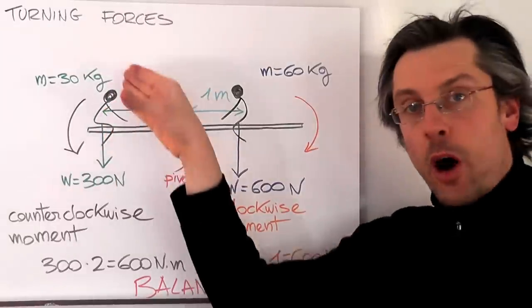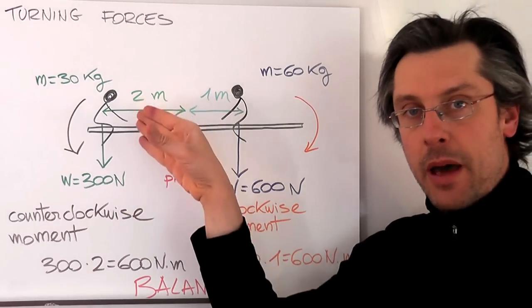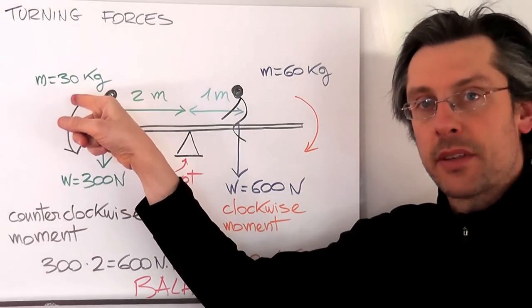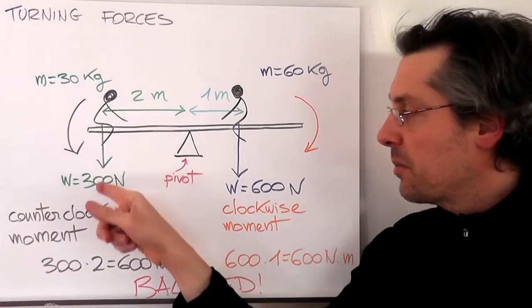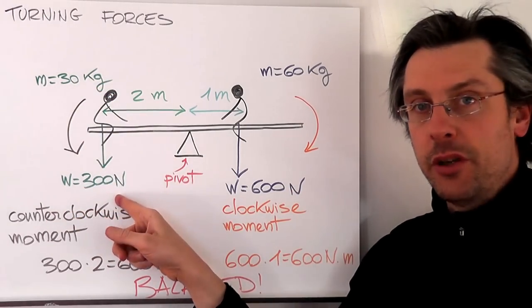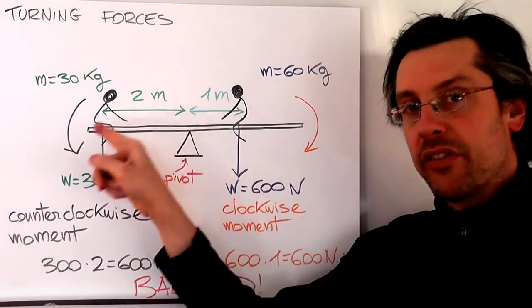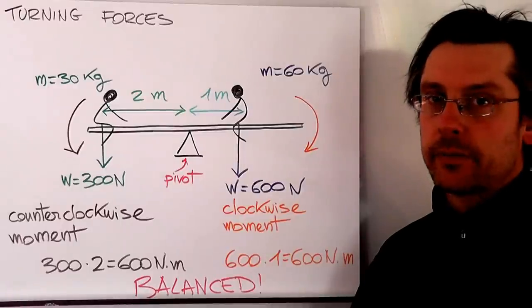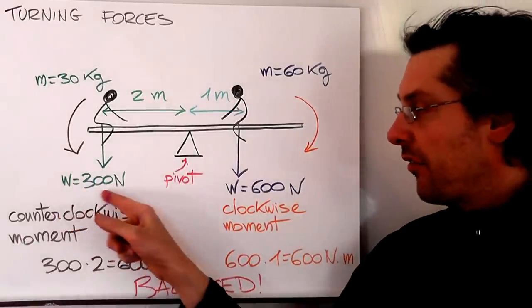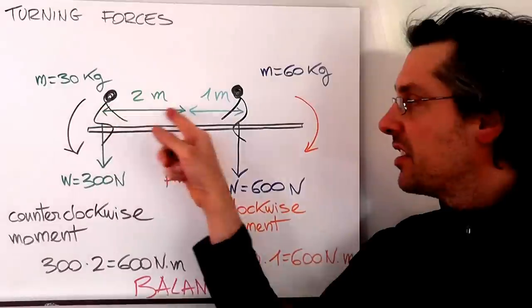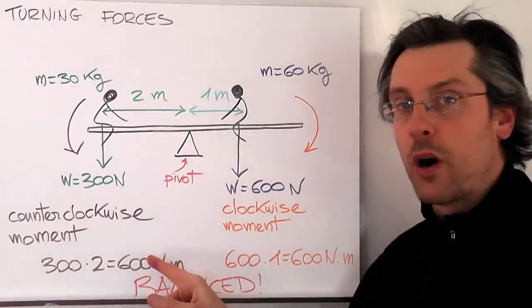The force is obviously given by his own weight, and if you remember that weight is equal to mass times the acceleration of gravity, more or less 10, 30 times 10 makes 300 Newton. So that is the force applied by this kid on this side of the seesaw. If we want to find the torque, we have to multiply this by the distance from the pivot, and that will give us what we call the counterclockwise moment.